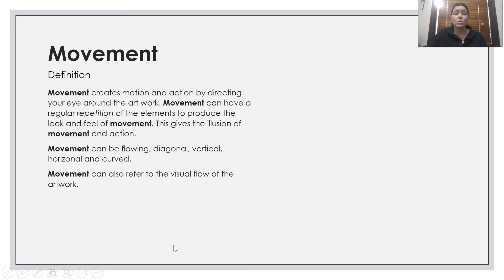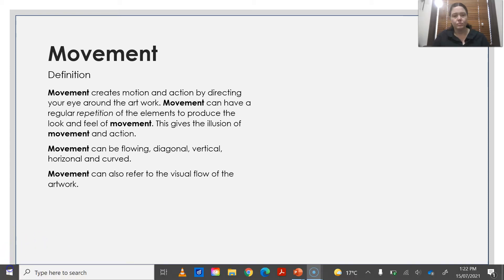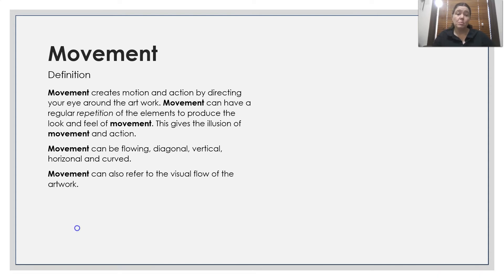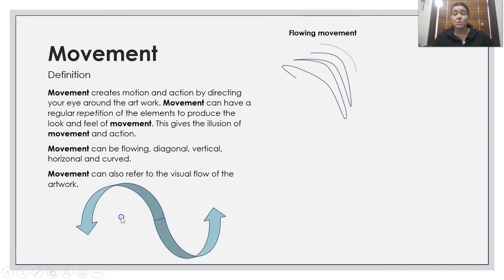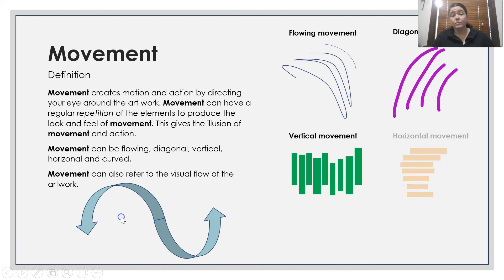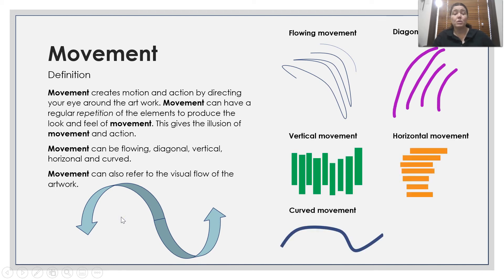Movement. Movement creates motion and action by directing your eye around the artwork. Movement can have a regular repetition of elements to produce the look and feel of movement — this gives the illusion of movement and action. Movement can be flowing, diagonal, vertical, horizontal, curved. Movement can also refer to the visual flow of an artwork.